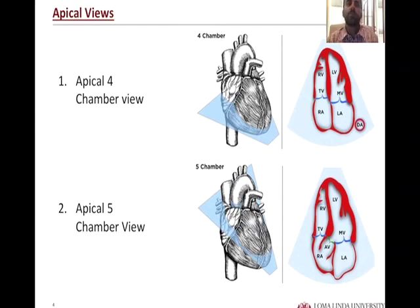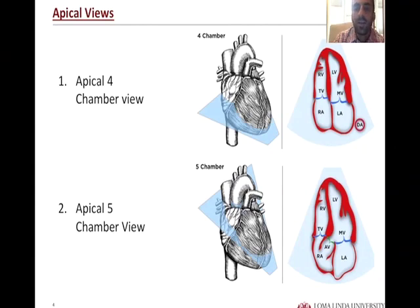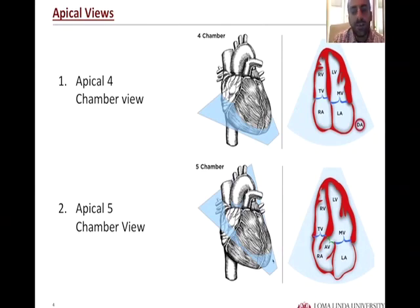The ultrasound probe is placed ideally over the apex of the left ventricle to obtain two different cross sections — two different views of the left ventricle — allowing us to evaluate all of the main cardiac valves outside the pulmonic valve. These are the views used to evaluate the tricuspid, mitral, and aortic valves. The key difference between the four-chamber and five-chamber view is that the five-chamber view is a more anterior cross section, allowing you to insonate and evaluate the left ventricular outflow tract, aortic valve, and aorta.